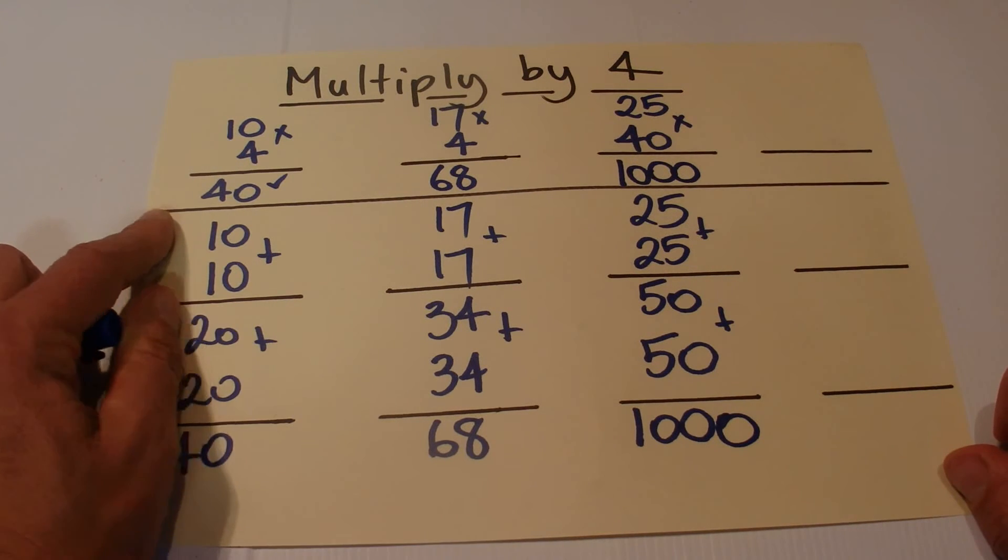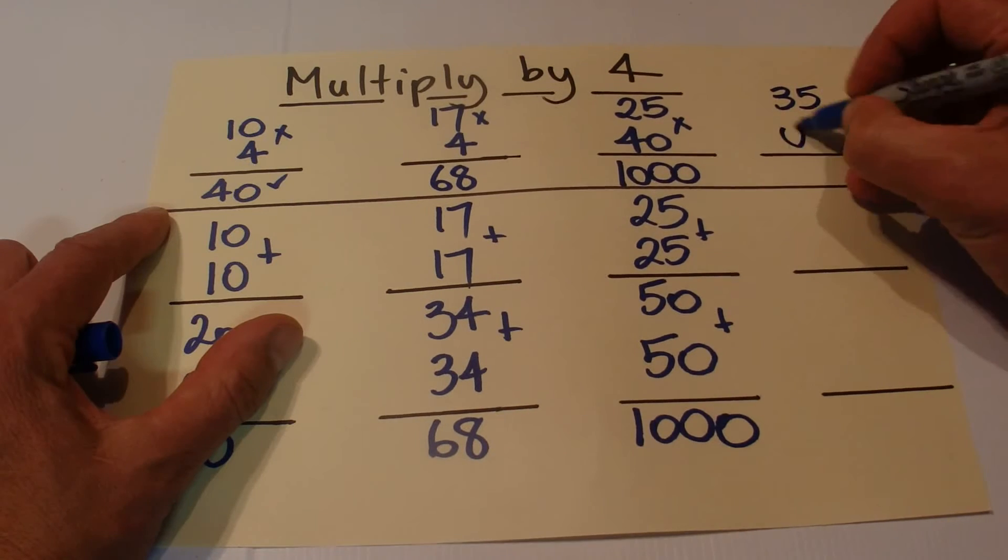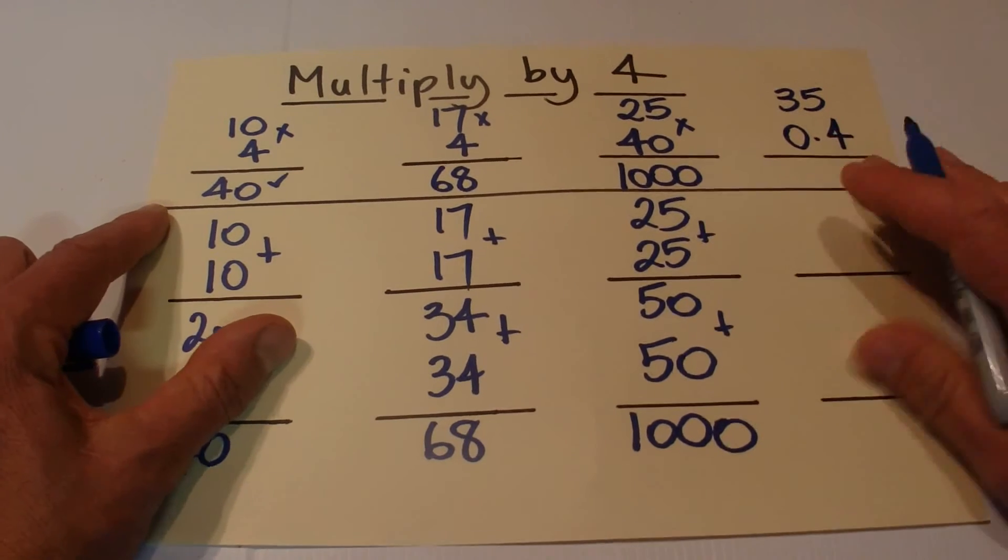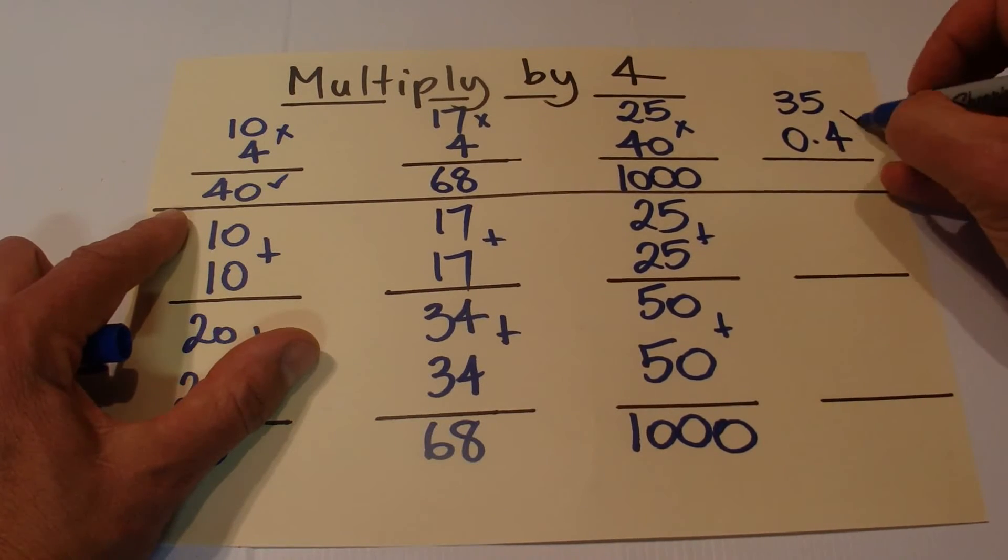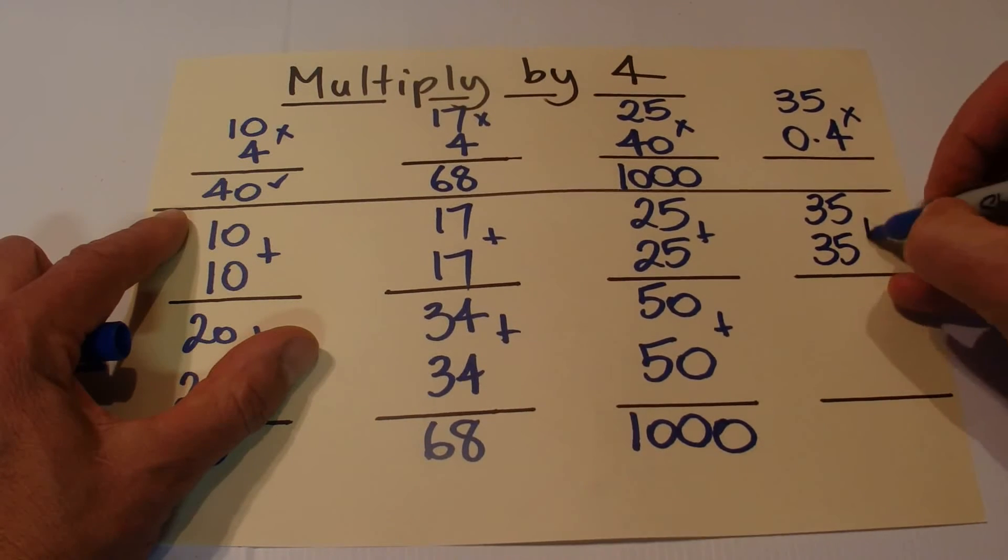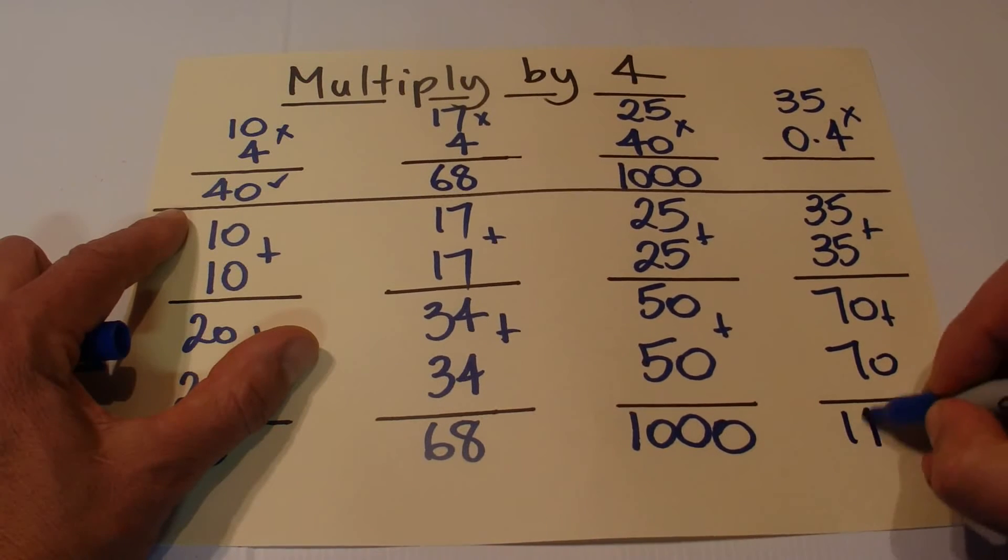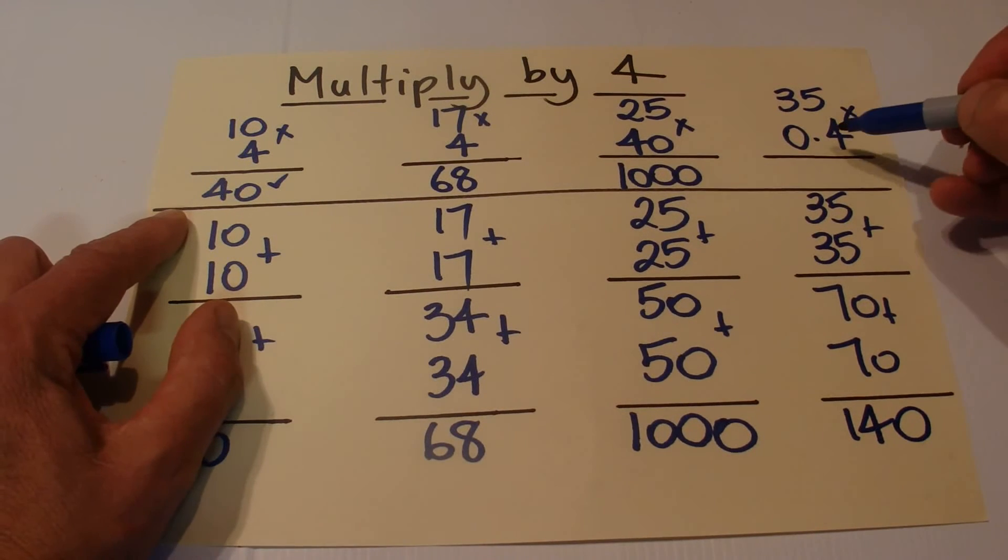The same principle again if you want to multiply by 0.4. Take 35 times 0.4: it's 35, and double that once which is 70, double that again which is 140.